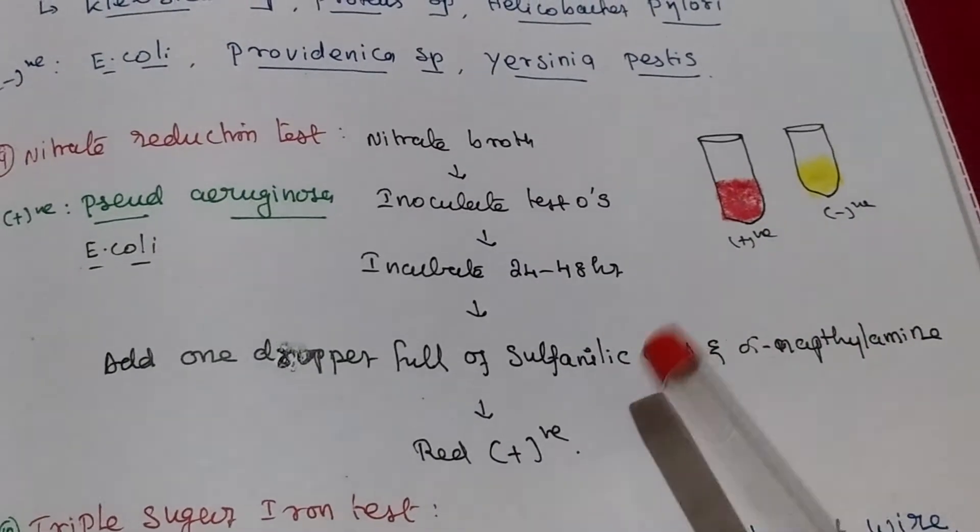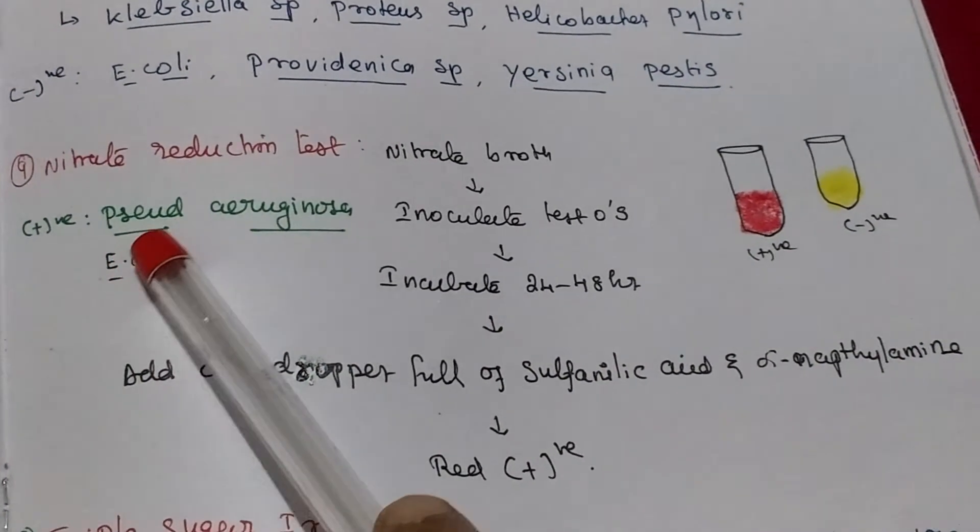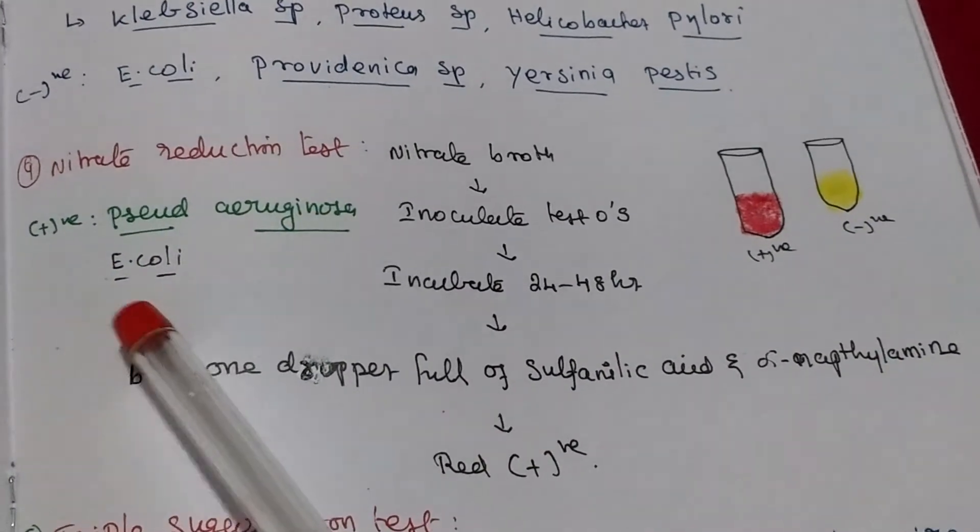Red color production indicate positive, otherwise negative. Positive organism Pseudomonas aeruginosa and E. coli.